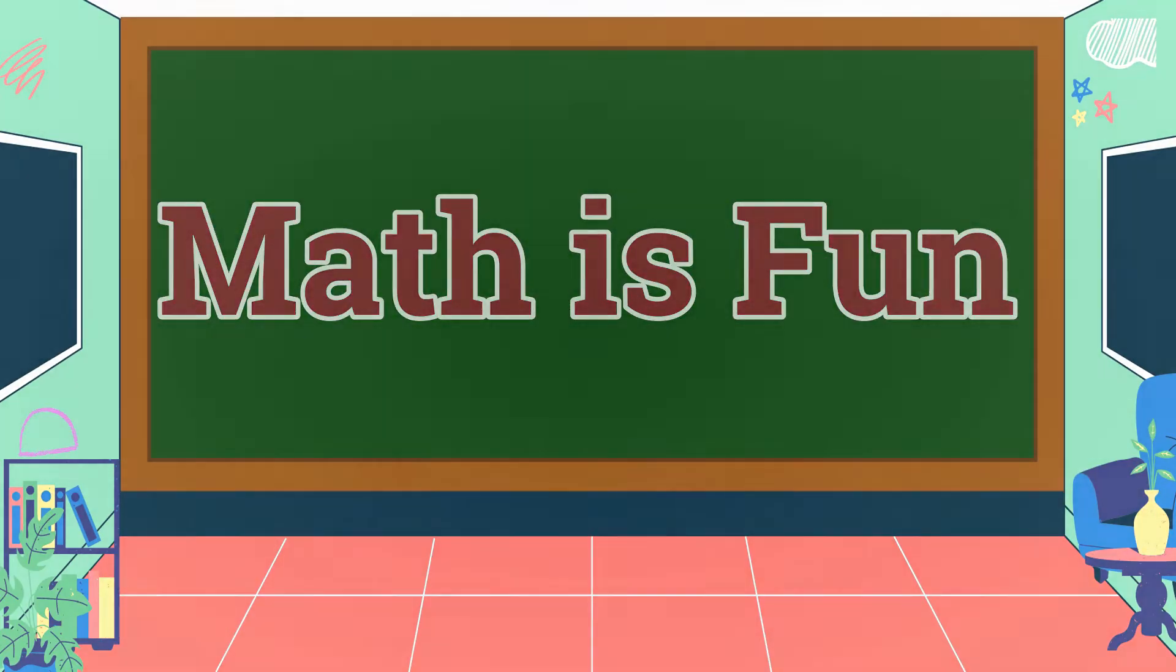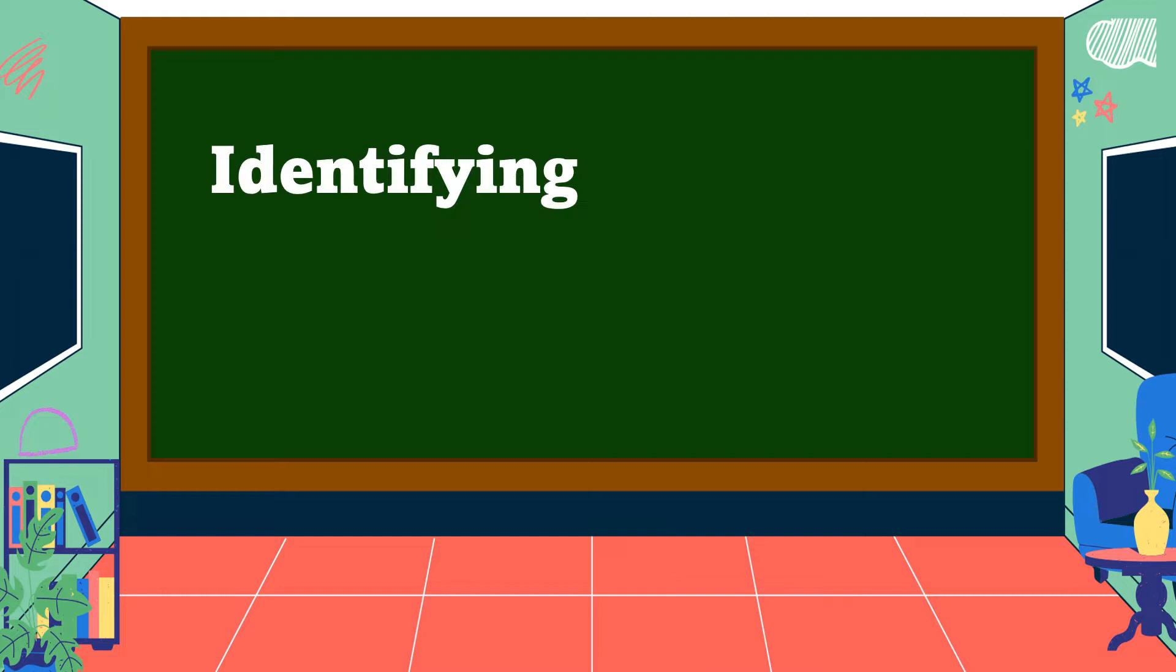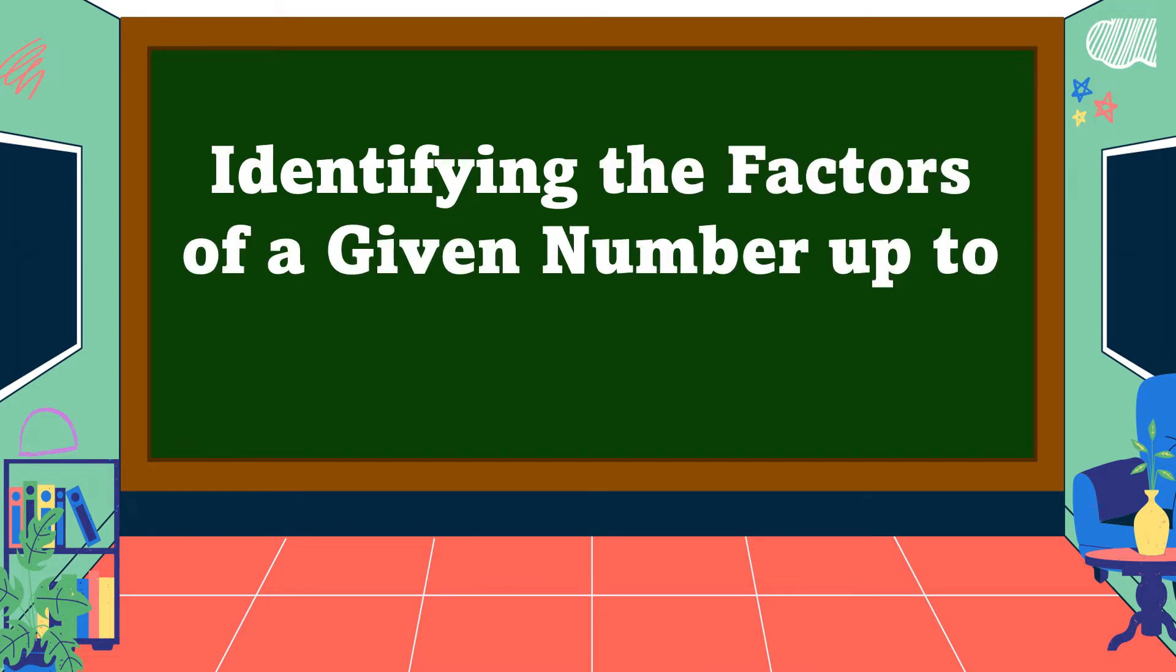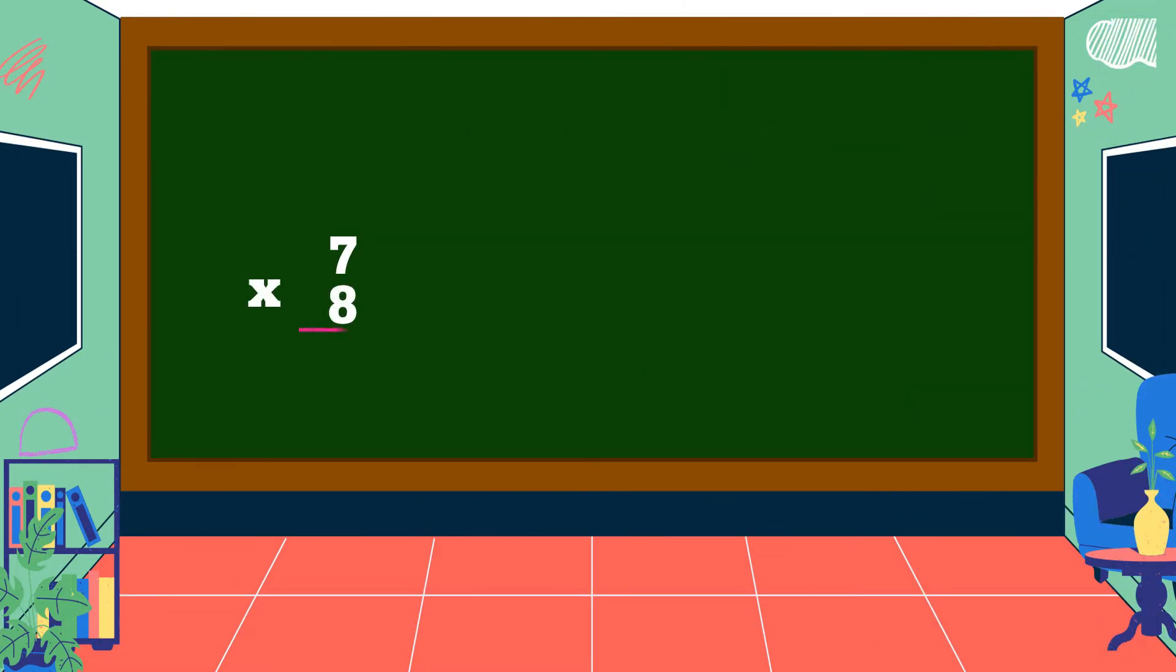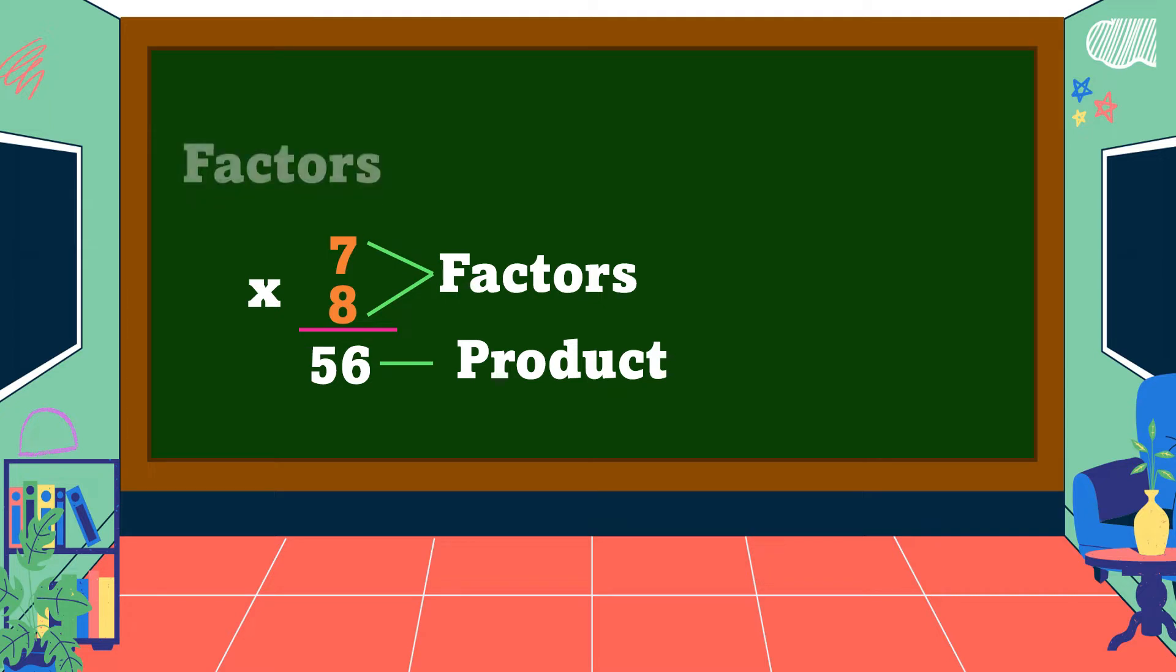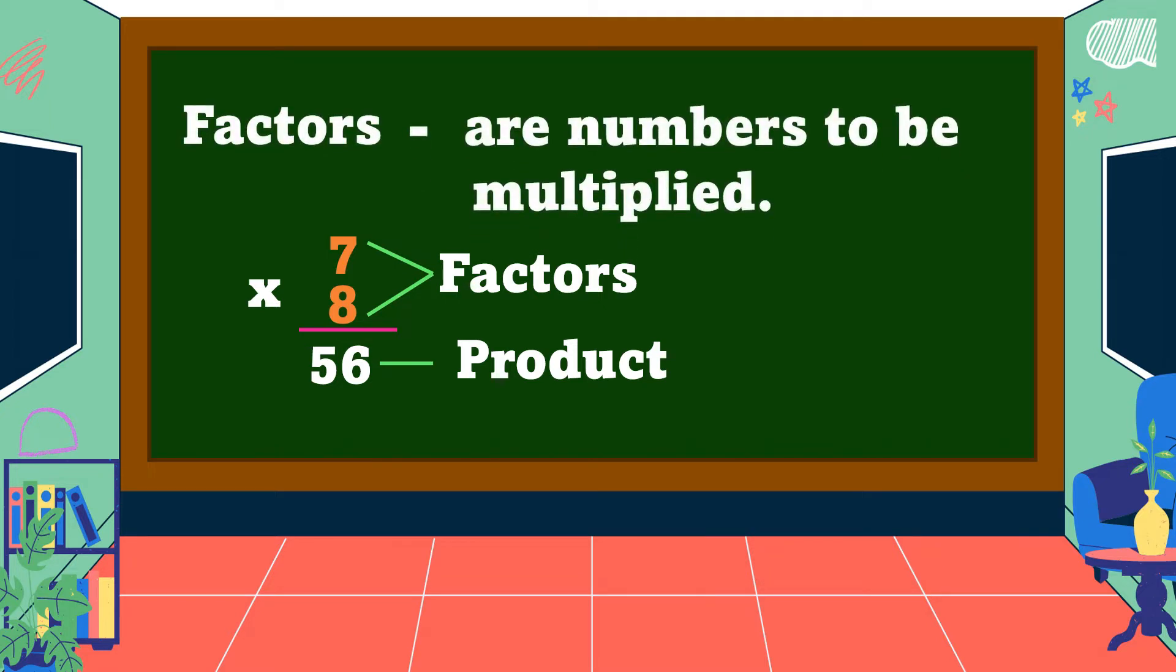Hello everyone, welcome to Math is Fun. Our lesson for today is all about identifying the factors of a given number up to 100. In 7 times 8 equals 56, 7 and 8 are called factors while 56 is the product. So what do you mean by factors? When we say factors, these are numbers to be multiplied.